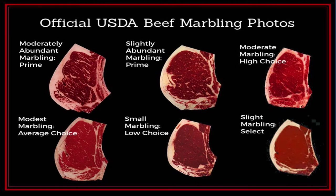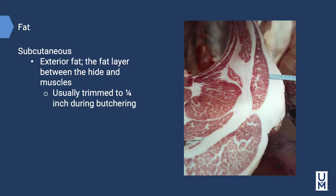A good way to remember this: prime is the number one — we always want prime. If we can't get prime, we'll choose choice. If we can't get choice, we'll get select. Another type of fat is subcutaneous fat — the exterior fat layer between the hide and the muscles. This is usually trimmed down to one quarter inch during butchering and is also good for rendering into tallow or beef fat.